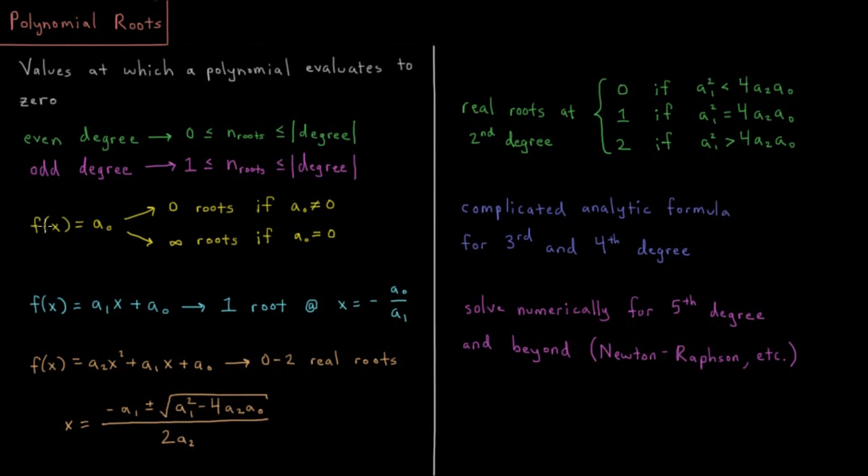The other possibility is that we have f(x) equals zero, in which case for every value of x we equal zero. So how many values of x are there? Well, there are an infinite number of values of x. So in that case, we have an infinite number of roots if the coefficient is equal to zero for this constant polynomial.